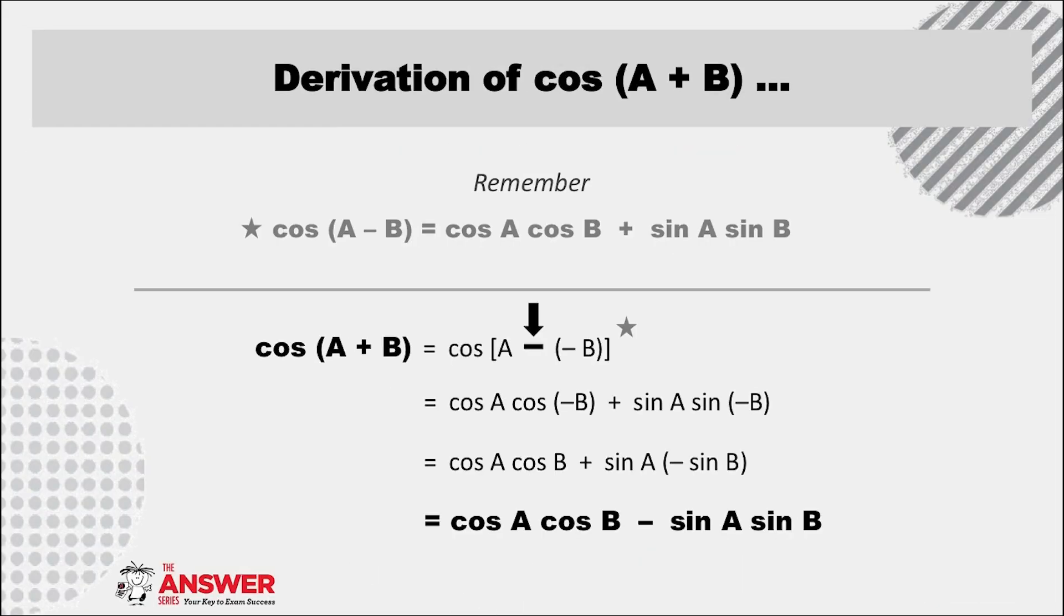Now that we've done the first step, we continue by applying the cos(A - B) formula to expand. We can now apply our reduction knowledge to the two ratios of negative B, an acute angle in the fourth quadrant.